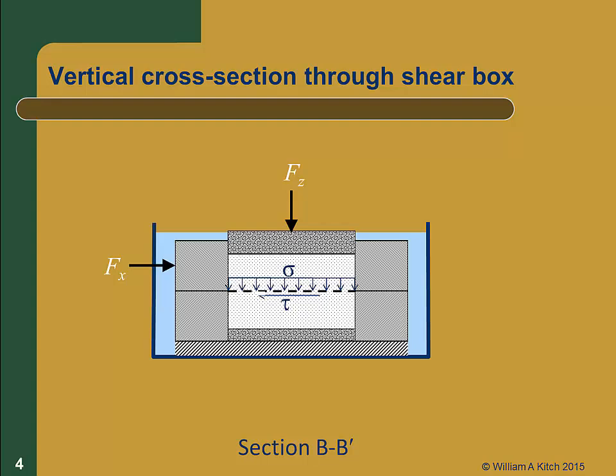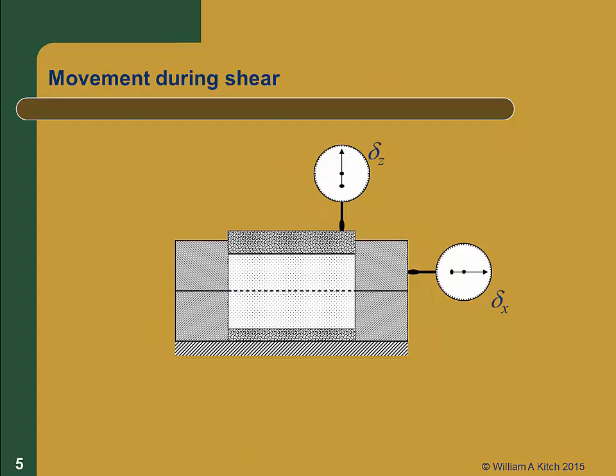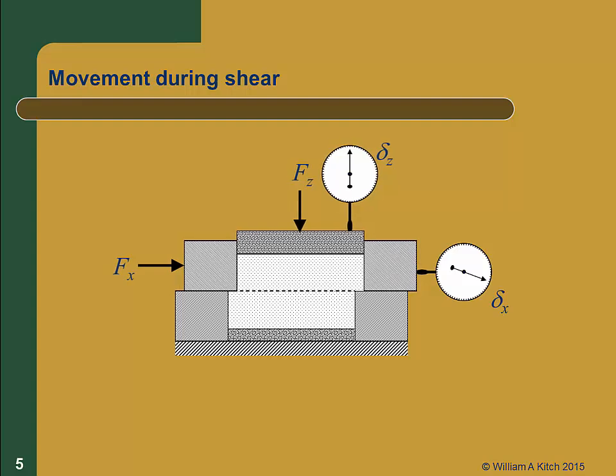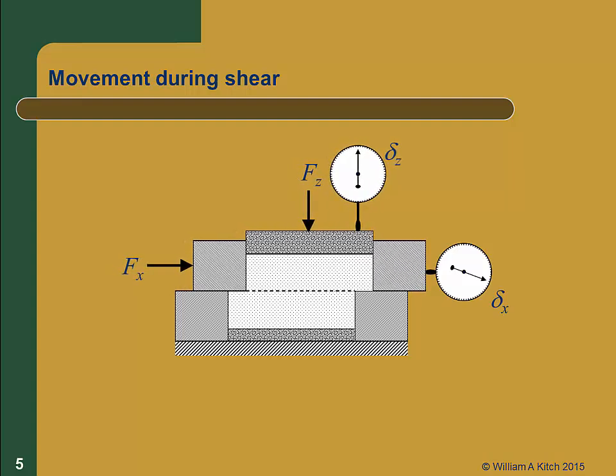During the test, we use dial gauges to measure the horizontal displacement of the shear box delta sub X and the vertical displacement of the specimen delta sub Z. Now let's see how the specimen is sheared. After the vertical load F sub Z is applied, the horizontal load F sub X is gradually increased. This generates a shear displacement in the specimen. The dial gauges record the horizontal and vertical movements during shearing. The vertical force and therefore the vertical stress in the specimen are constant during testing, while the horizontal force and the shear stress are increasing.